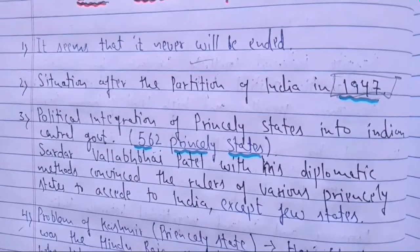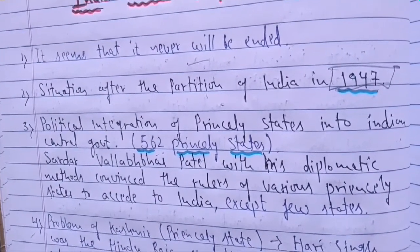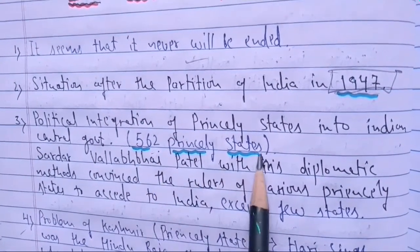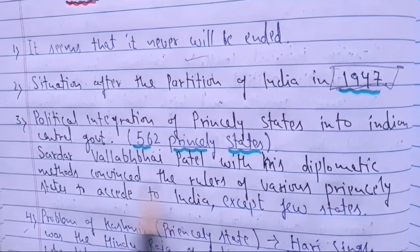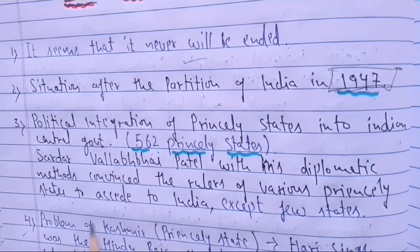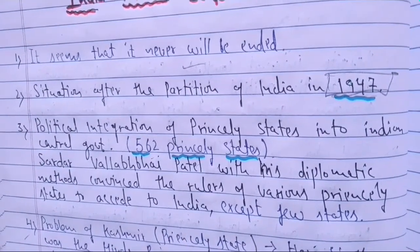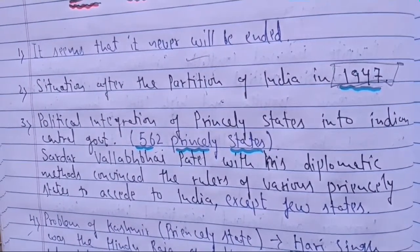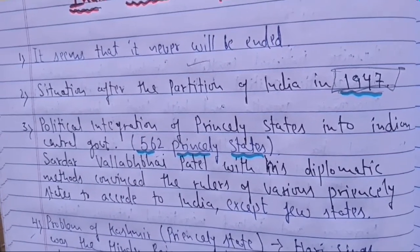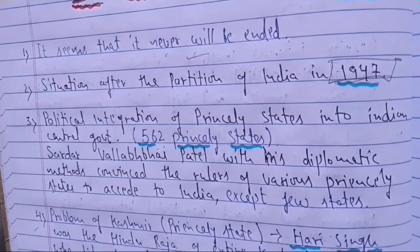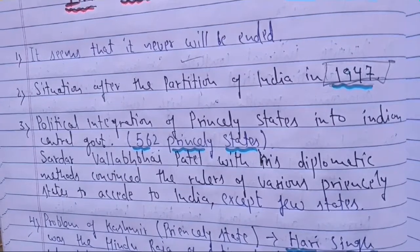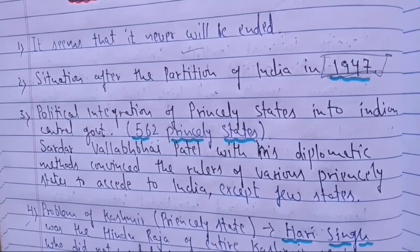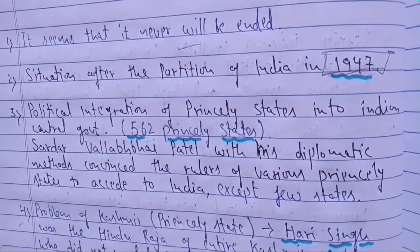Regarding the political integration of princely states into the Indian central government — all 562 princely states — Sardar Vallabh Bhai Patel, with his diplomatic methods, convinced the rulers of various princely states to accede to India, except for a few states. Patel played a very important role in convincing and merging all the princely states with the Indian central government, fulfilling the dream of first Prime Minister Nehru.